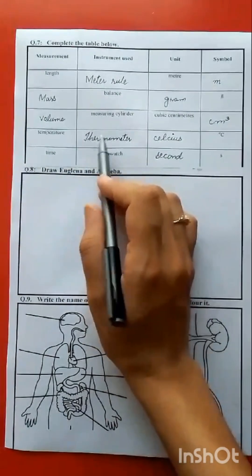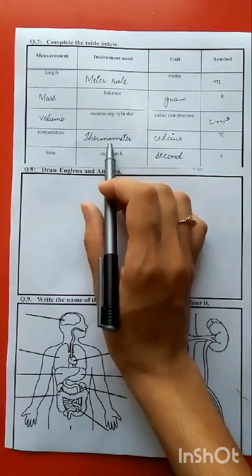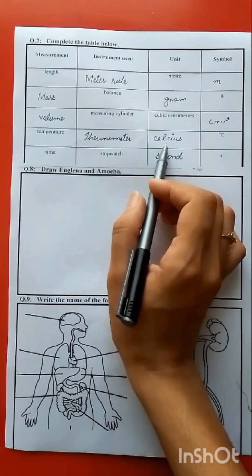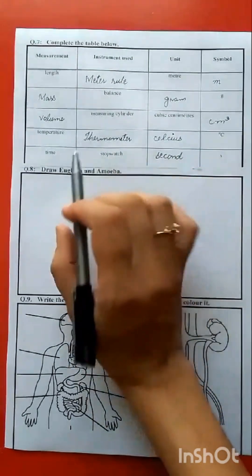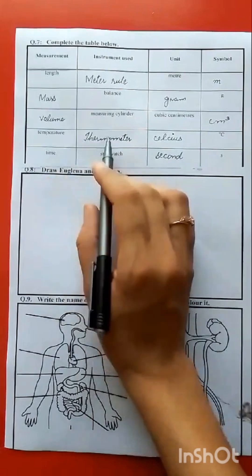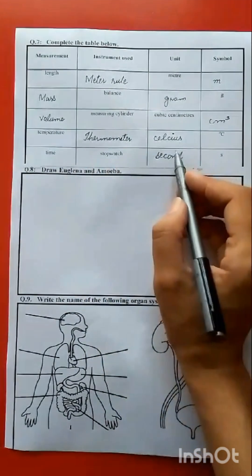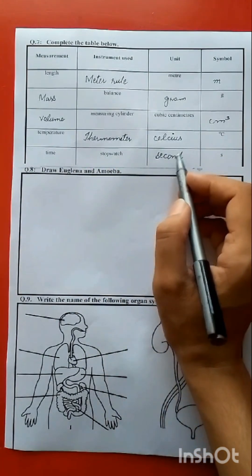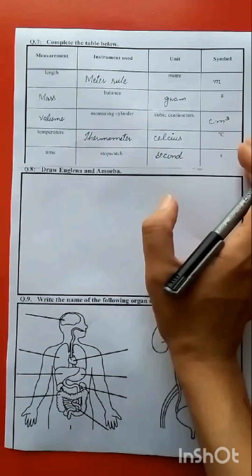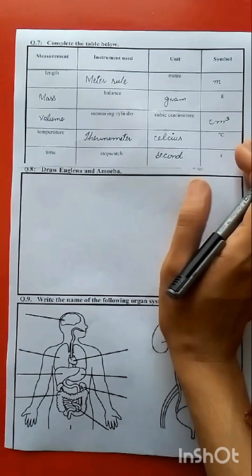Temperature we can measure with thermometer, unit is celsius and this is the symbol. Next is time. We can measure time, unit is second. So this is question number 7 solved. Next is question number 8.